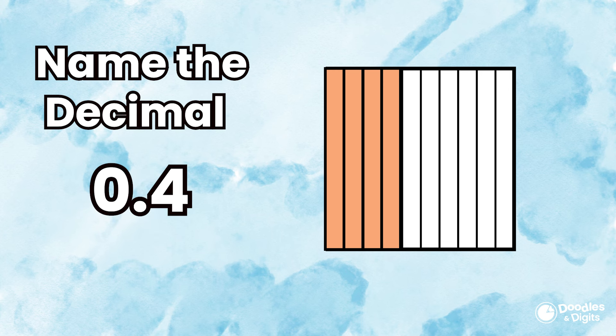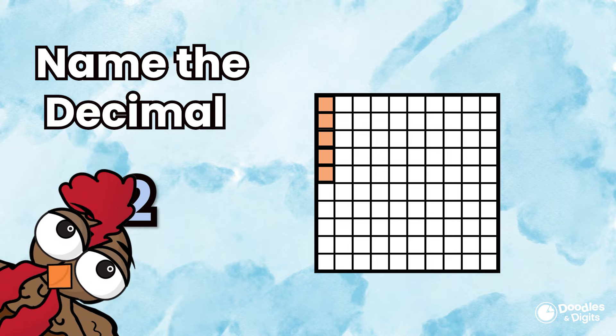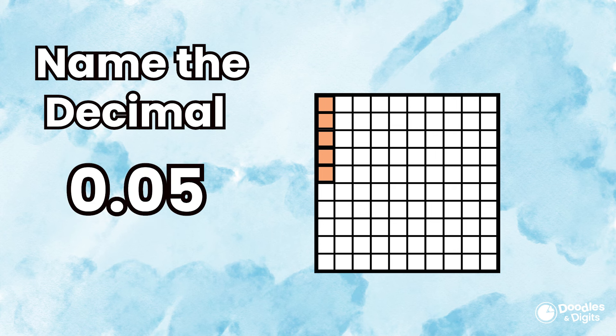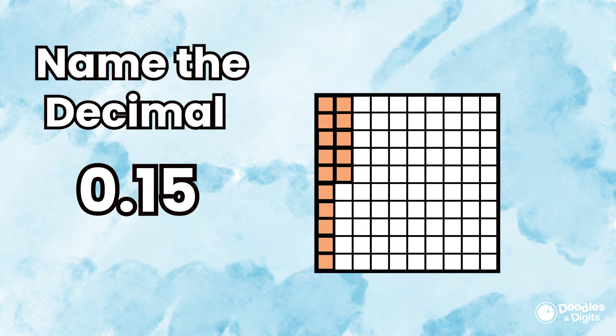This decimal is four tenths or 0.4. This model is showing five hundredths or 0.05. This model is showing fifteen hundredths or 0.15.